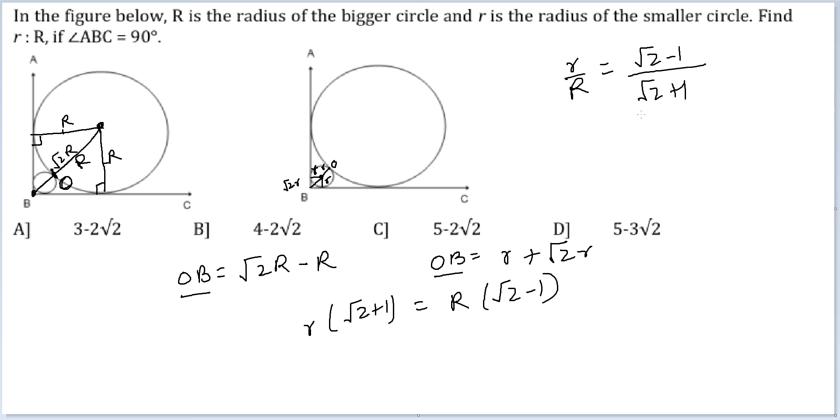Now the problem here is, once you reach this place, the options are not in fractions. The options are in some irrational numbers but not in fractions. So next thing you would have to do is rationalize this fraction.